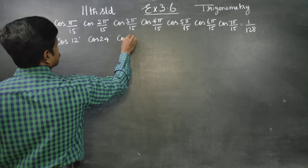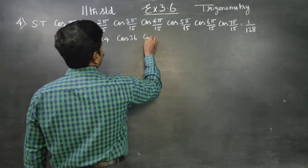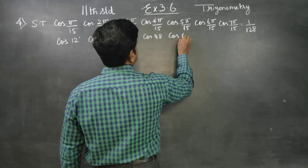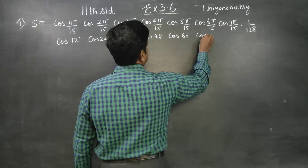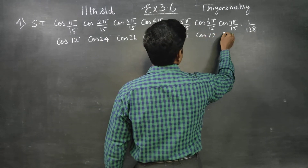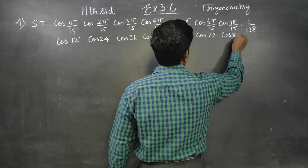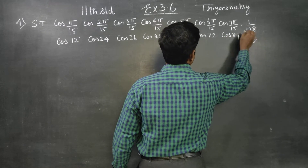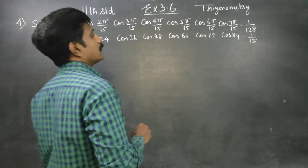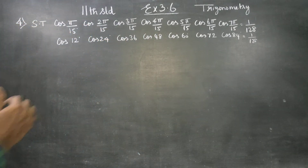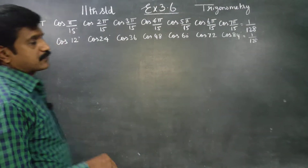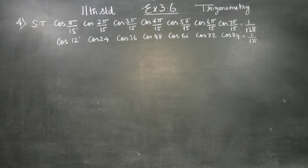Three times 12 is 36 degrees, four times is 48, five times is 60, then 72, then 84 — this is equal to 128. Actually this is the sum. In the sum we have to prove, we have to show the sum of radian measure and degree measure. OK, we shall start the sum.